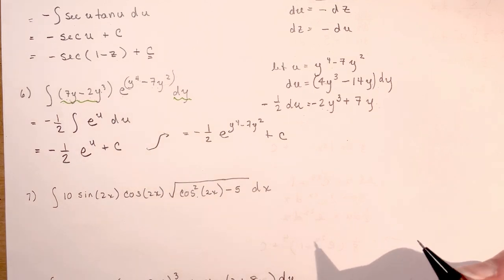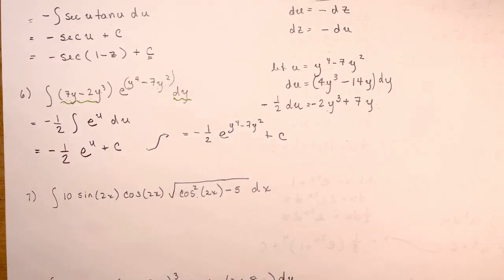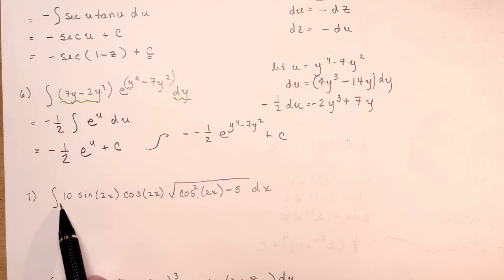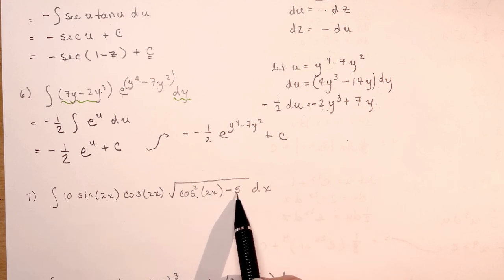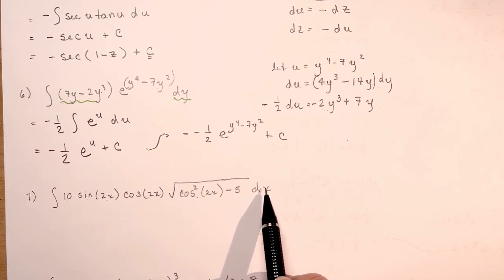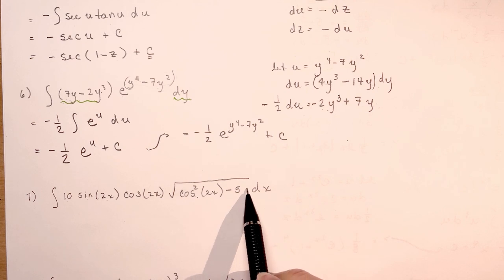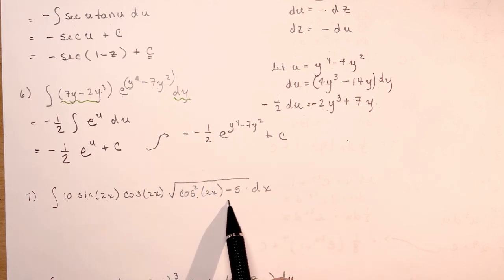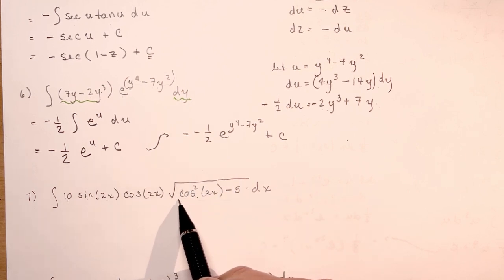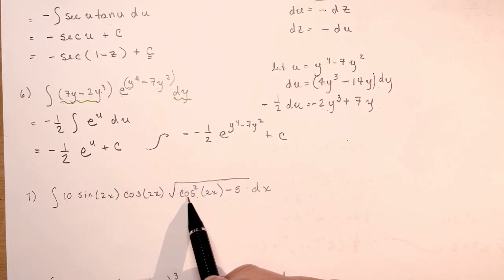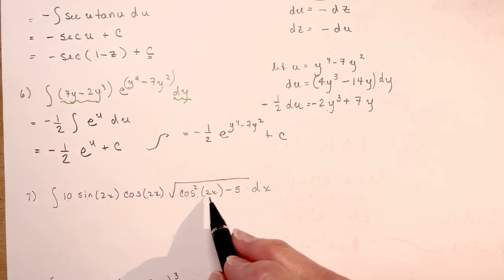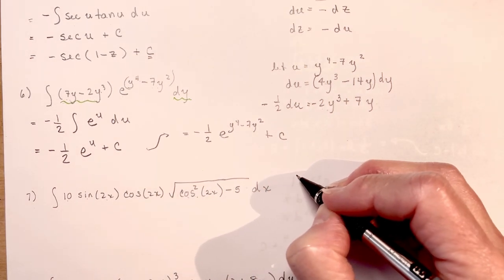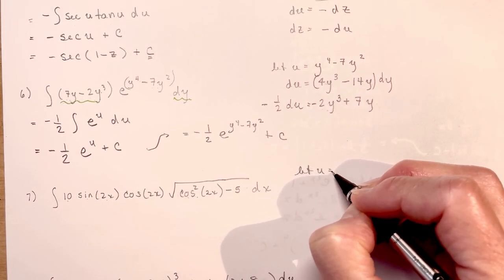Number 7: 10 sine 2x times the square root of cos squared 2x. Looking at the expression under the radical, we're going to let this be u — it's always in the most uncomfortable place, under the radical sign this time. Let u equal cos squared 2x, which I'll rewrite as the quantity cos 2x, squared.